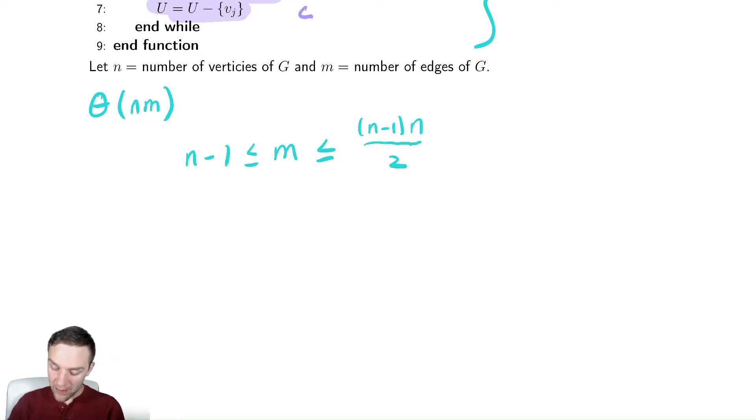Therefore, my bounds here are going to be either n squared for a lower bound when I multiply that by n, or n cubed for an upper bound when I multiply that by n. Big O of n cubed is not good.